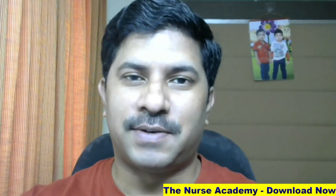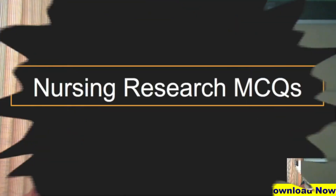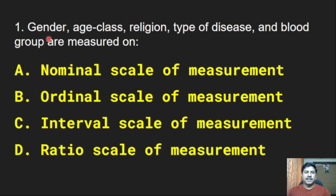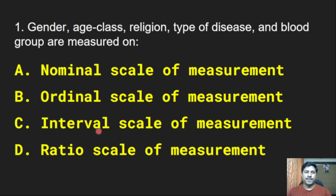We will move to our topic, the nursing research related MCQs. First question: Gender, age, class, religion, type of disease and blood groups are measured on — nominal scale of measurement, ordinal scale of measurement, interval scale of measurement, or ratio scale of measurement?